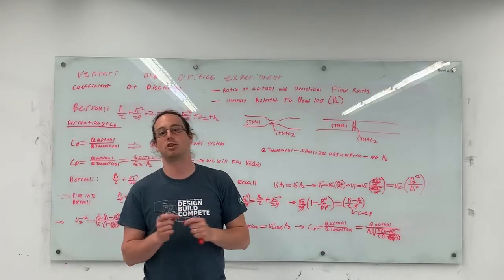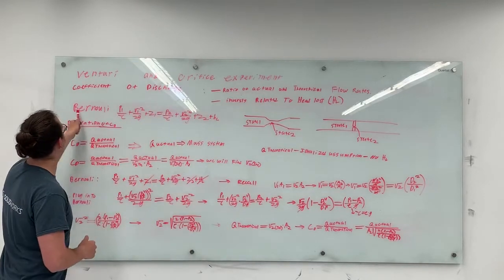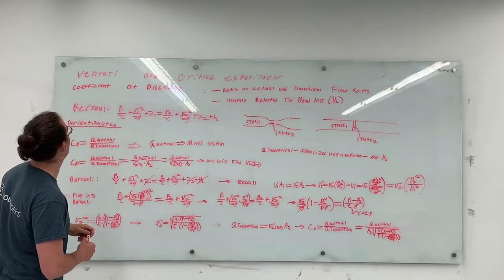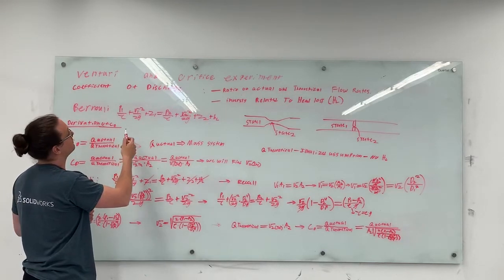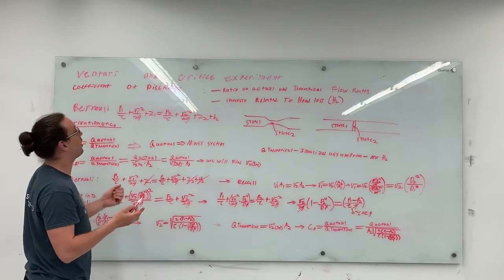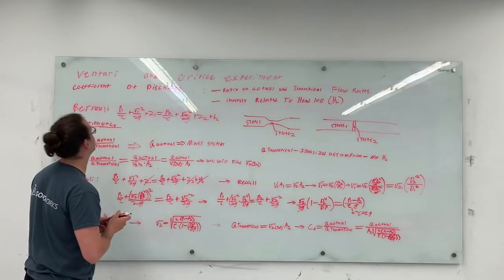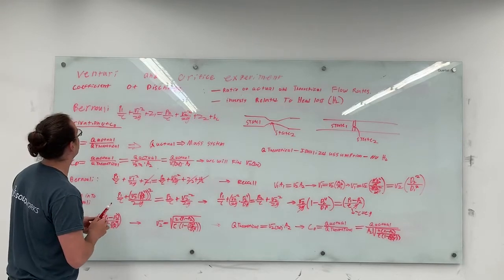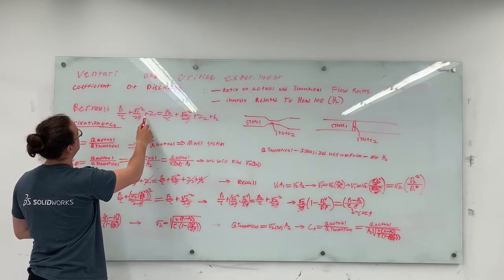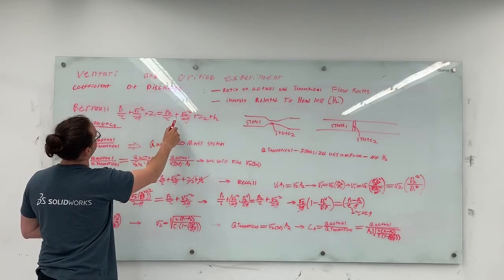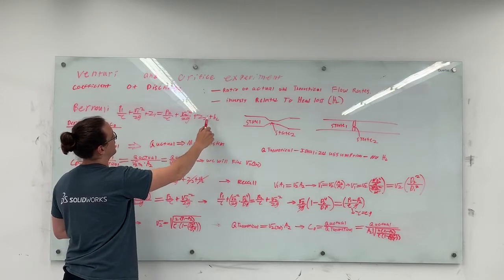Head loss is an energy loss between two states. As you can see here, you have the Bernoulli equation. So effectively, p1 over gamma plus v1 squared over 2g plus z1 equals p2 over gamma plus v2 squared over 2g plus z2, with a head loss term. Gamma is rho times g, where rho is the density of water and g is your gravitational constant.